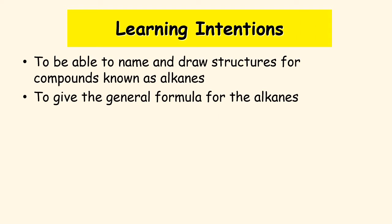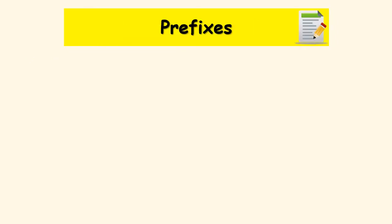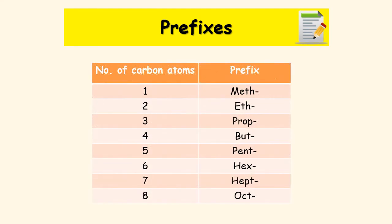Our learning intentions for the rest of this lesson are to be able to name and draw structures for compounds known as alkanes — the first homologous series we're going to look at — and also to give the general formula for alkanes. Before we get on to this, we need to learn some things called prefixes. A prefix is a short part of a word that goes at the start of a chemical's name and gives us a little bit of information. For hydrocarbons, these prefixes tell us how many carbons are in the chain. We can go from one to eight — that's all you need to know for National 5.